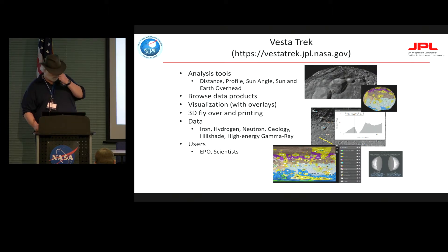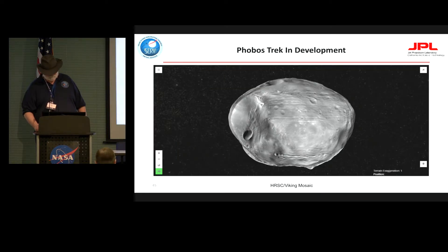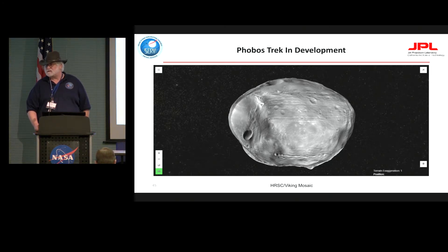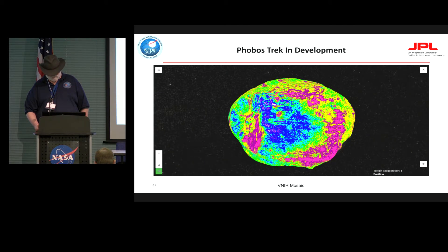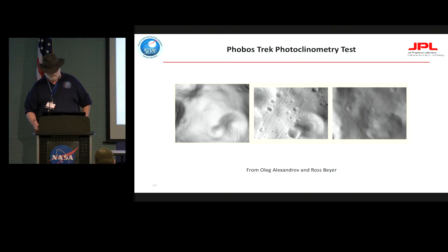We've had Vesta Trek for some time now. The Dawn mission is engaging us to create a new and improved version with new data they are getting ready to provide us — very excited about that. We are also working on Phobos with our partners from JAXA and ISAS, and we're involved in PUDDLSWIG — the Phobos-Deimos Landing Site Selection Working Group — as well as the new Phobos Mapping Working Group. This includes new work in photoclinometry coming out of Ames, which is looking very promising.